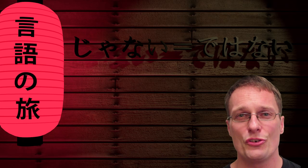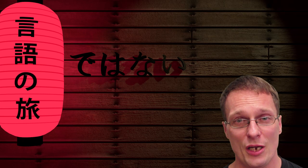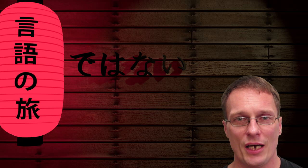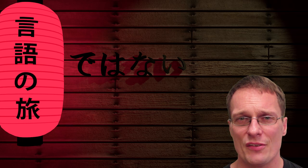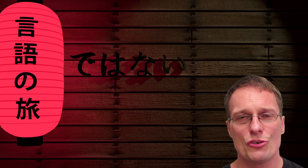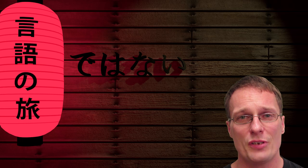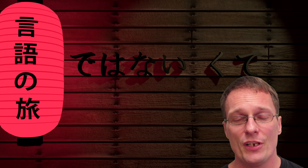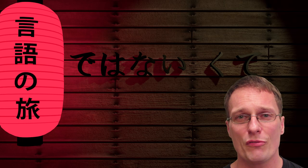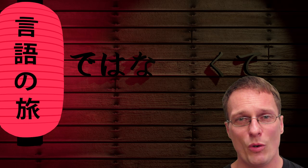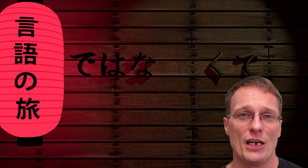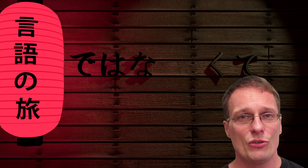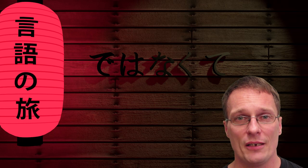Now, if we substitute in the more formal form of ja — dewa — we have dewa nai. This can't be used in the middle of a sentence though. So we need to change it to a sort of te form by adding kute. We drop the final kana of dewa nai — the e, represented by an i in Romaji — and we add kute, and we have dewa nakute.